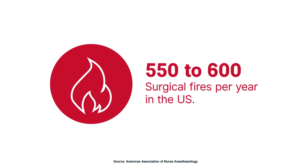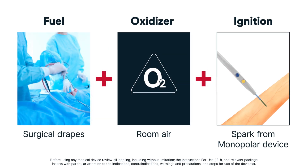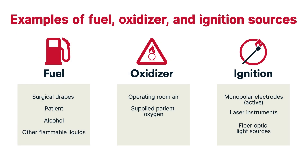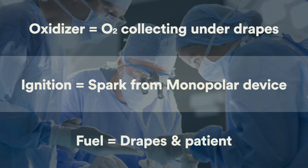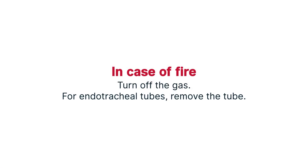Surgical fires are one of the most serious risks in surgery. In monopolar electrosurgery, 550 to 600 surgical fires per year happen in the U.S. Surgical fires require a fuel source, oxidizer, and an ignition source. A spark from an active electrode can ignite a fire in the presence of fuel and an oxidizer; examples of common fuel, oxidizer, and ignition sources in the OR are shown here. One situation where a surgical fire can occur is during a facial or tracheal procedure where the oxygen delivered to the patient accumulates under the surgical drapes, forming a tent filled with oxygen. In this scenario, a spark from an electrosurgery device can ignite the oxygen and set fire to the drapes and the patient. In this event, immediately turn off the gases to eliminate the oxidizer so that the fire can be extinguished. In the case of an endotracheal tube fire, it's critical to immediately remove the tube.